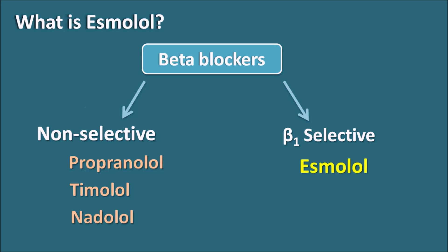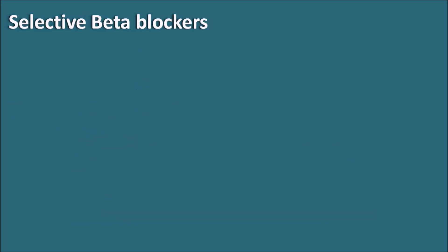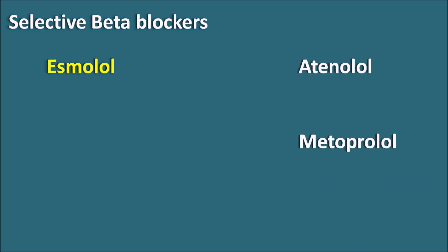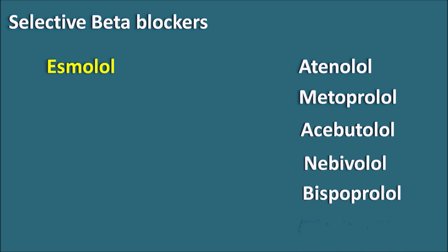Esmolol is a selective beta-1 blocker. Other selective beta blockers include atenolol, metoprolol, acebutolol, nebivolol, and bisoprolol. So we have a list of selective beta blockers.